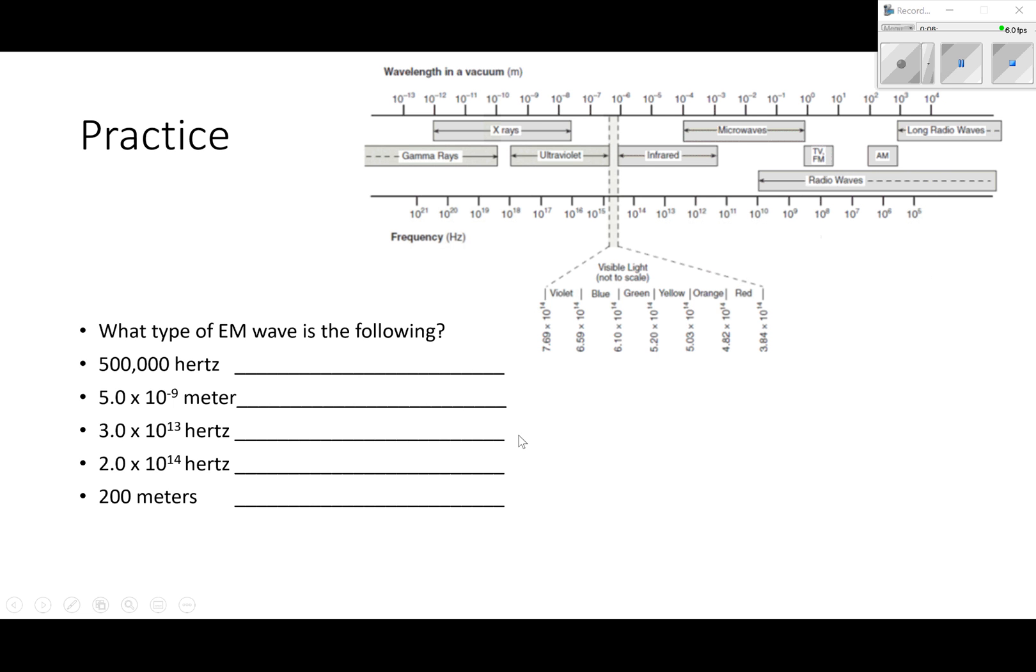This one's 5 times 10 to the minus 9 meters. Meters is wavelength, hertz is frequency. So we go to wavelength, we find 10 to the minus 9 - that's right here. So that would be x-rays or ultraviolet, either one. You guys should try pausing the video, try doing the next three, and then resuming the video and see if you got them right.